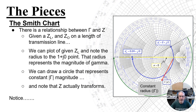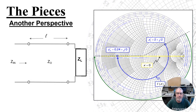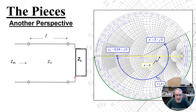Moving along that circle of constant gamma happens as we move along the transmission line. So moving from here around this way is analogous to starting with this load and moving along this transmission line. It's important to know this is how we can connect between what we're seeing here and what we're actually doing out in the real world.